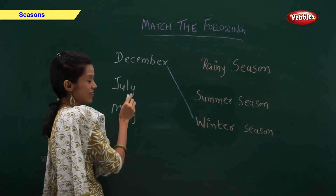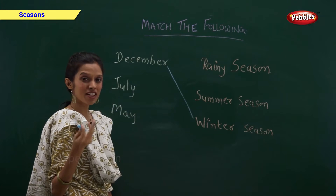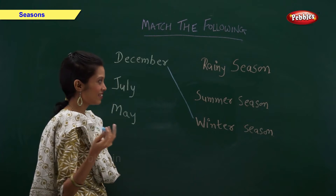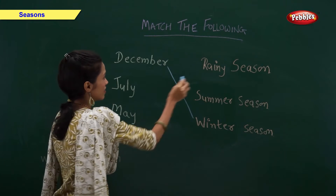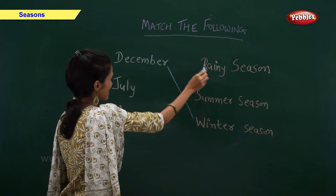July. Month of July falls in which season? Rainy season. Yes.